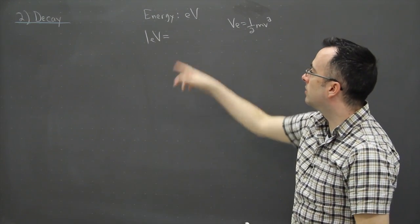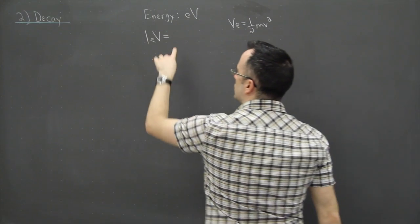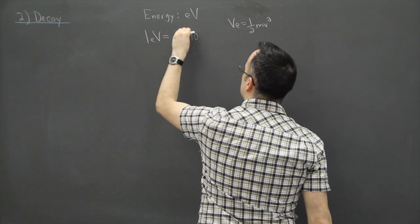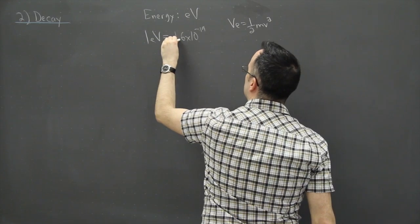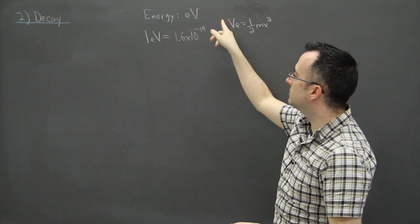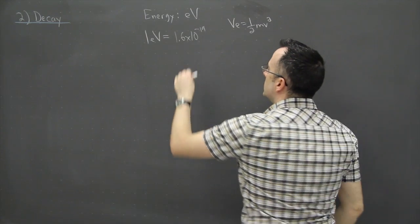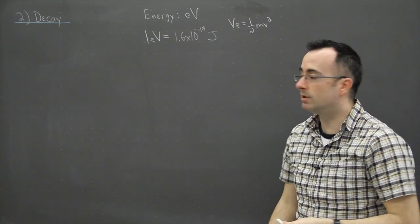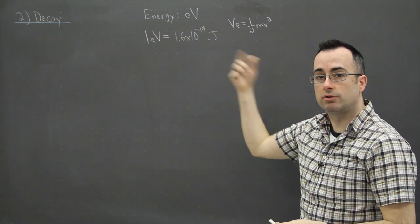Instead of joules you use electron volts. It's just the charge of an electron which is 1.6 times 10 to the minus 19 coulombs, except you just multiply that by 1 volt. So it turns out a coulomb times a volt gets you a unit of energy and it's this many joules. So this just helps you to convert back and forth between energy in joules or electron volts.